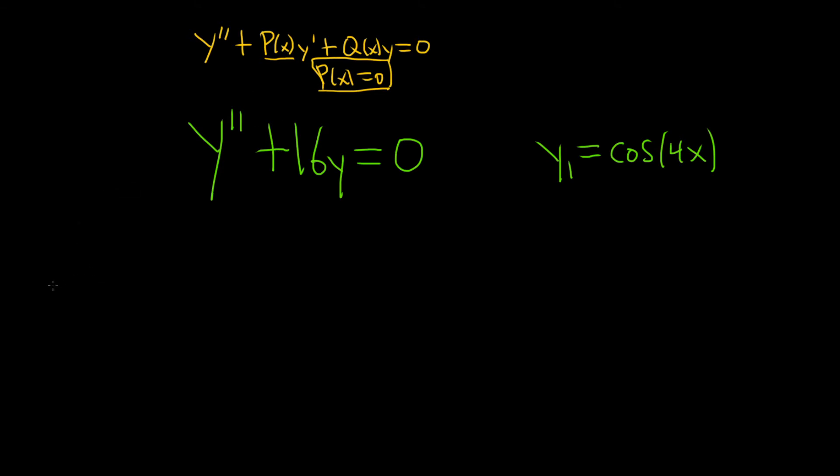All right, now let's go ahead and use the formula. So y sub 2 is equal to y sub 1 of x times the integral. So in the numerator, we have e to the minus integral big p of x dx. Now you see why the big p was important because we need to actually plug it in.